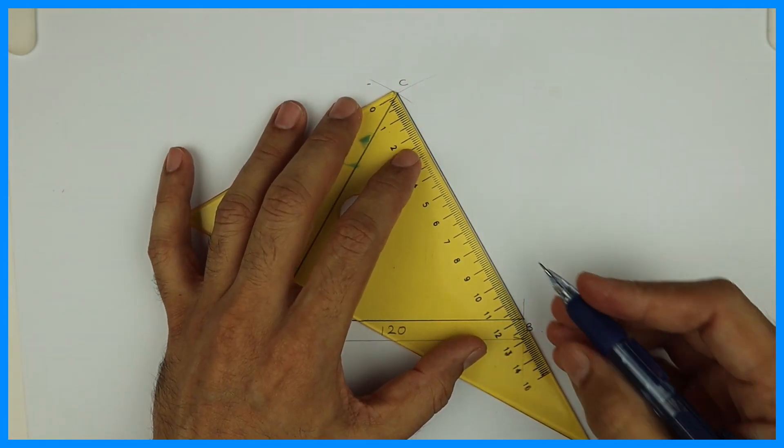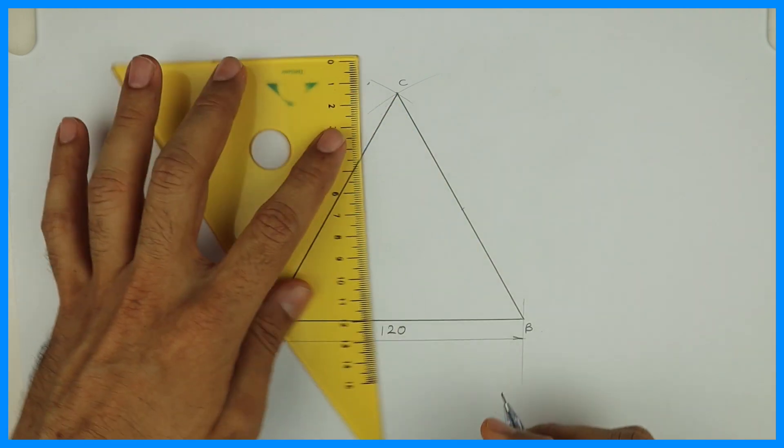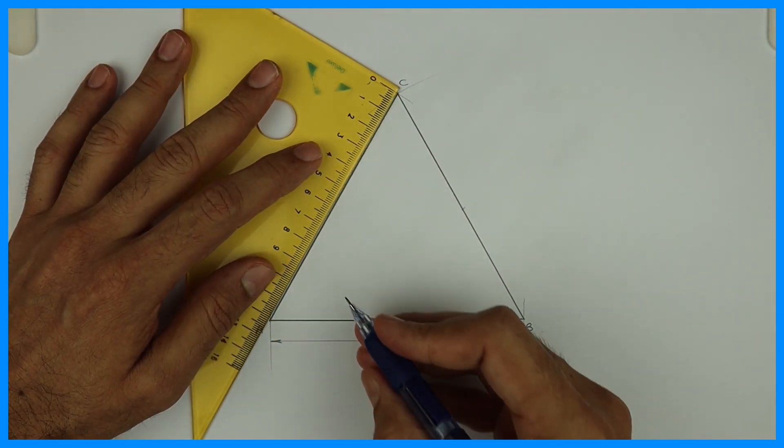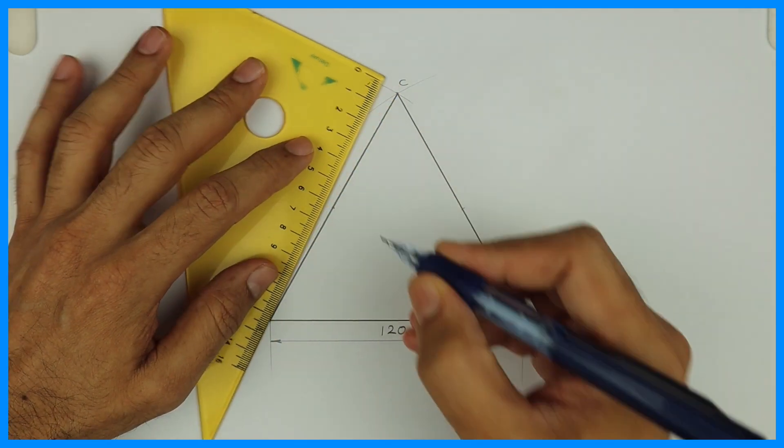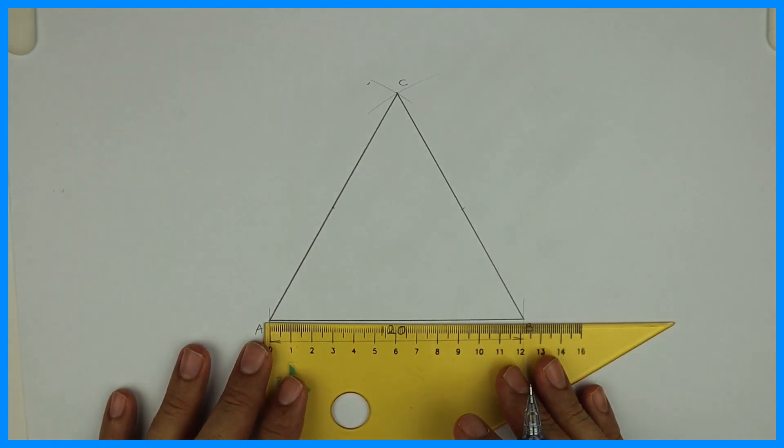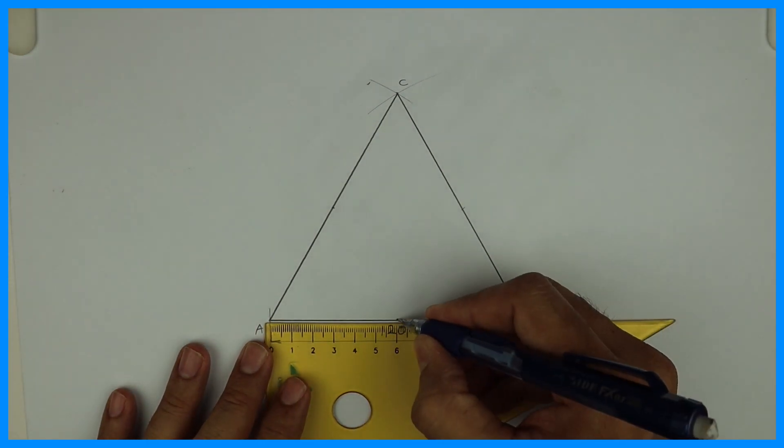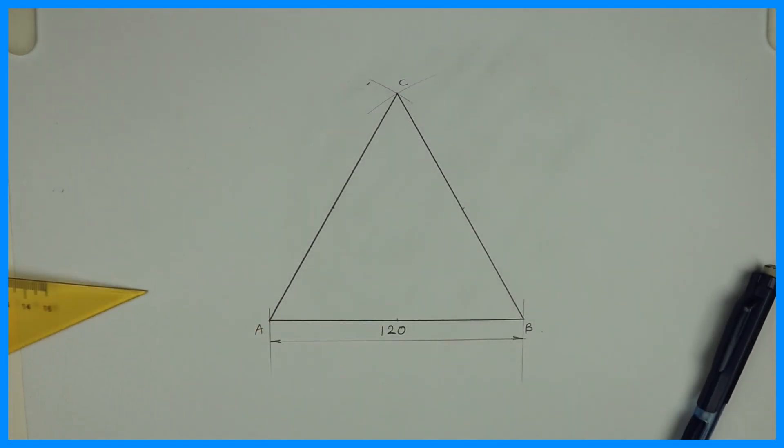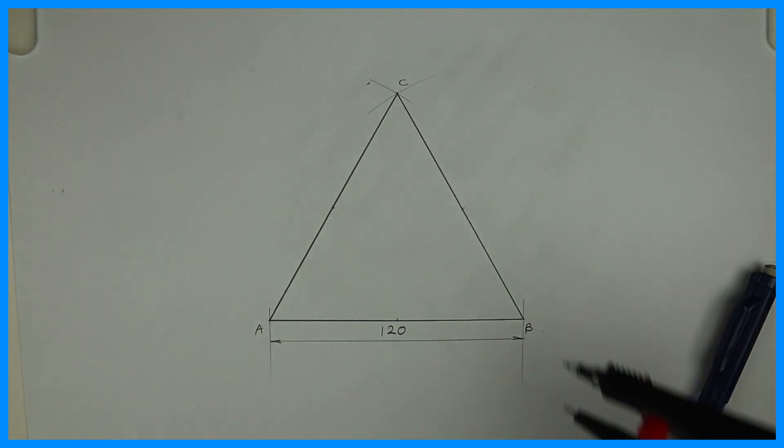After that you mark midpoint. This is 120 so you mark 60 or 6cm. Here also you mark 60. Why we are doing this? Because we have to bisect angle B, A and C. So it should pass through this point. Only for double checking we are doing this.